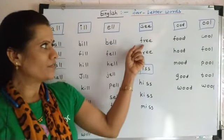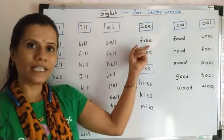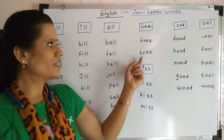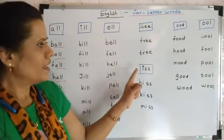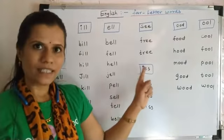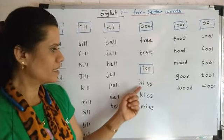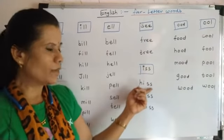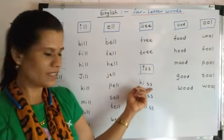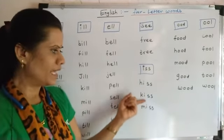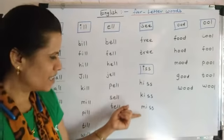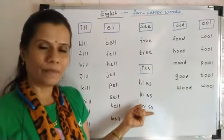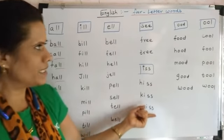F R double L — free. T R double L — tree. I double S — is. H I double S — his. K I double S — kiss. M I double S — miss.